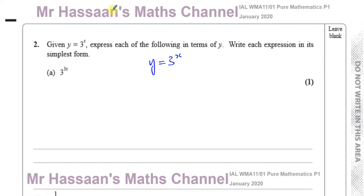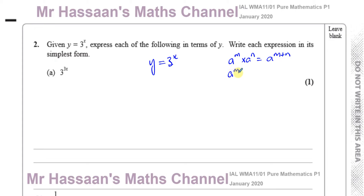This is all about indices, and these questions will be based on the laws of indices. The three main laws are: the addition law — when you have two numbers with the same base multiplied together in index form, you add the powers; when you divide two numbers in index form with the same base, you subtract the powers; and when you raise something to the power of another power, you multiply the powers.